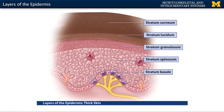Here we are looking at the same visual from previous modules. This is going to be the deepest part of the epidermis — your stratum basale — and then we move more superficially to the stratum corneum. Right underneath the epidermis is your dermis, the deepest part of the skin layer.